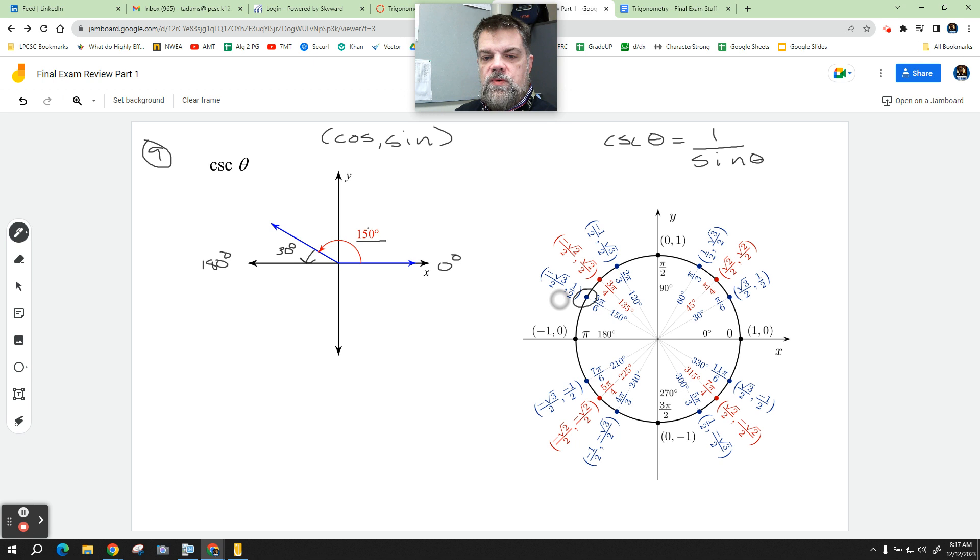And sine is one half. So you just need the reciprocal of that. In other words, if sine of 150 degrees equals one half, then cosecant of 150 degrees equals two. That's it. You just reciprocate it. Two over one. Any questions?